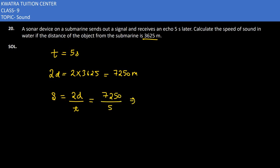So dividing it, what value we will get is 1450 meter per second. So that would be the speed. Right, speed of sound in water. So that would be your answer for 20th part. Now moving to 21st part.